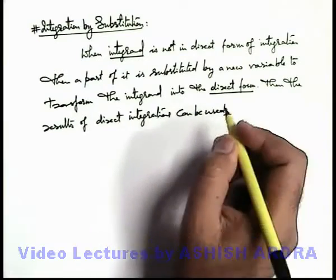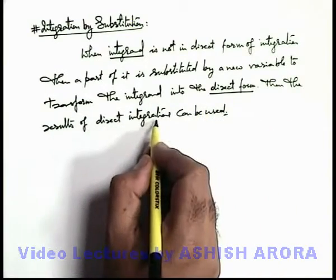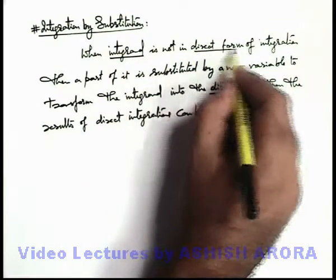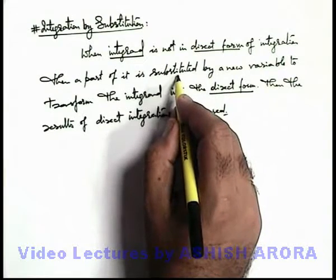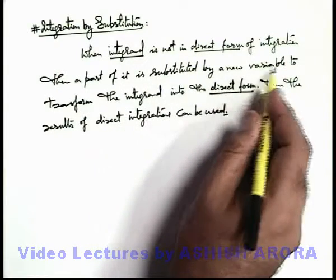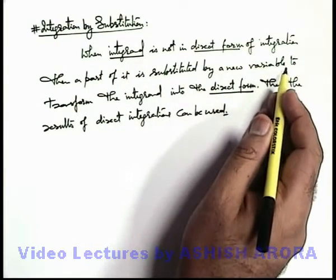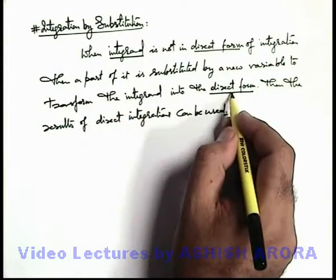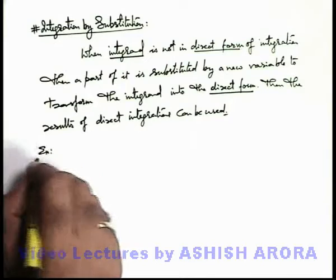We know well that there are some limited results of direct integration. If an integrand is given which is not in the direct form, then we substitute part of the integrand by a new variable so that the integrand will convert or transform into the direct form. Let's take up an example.